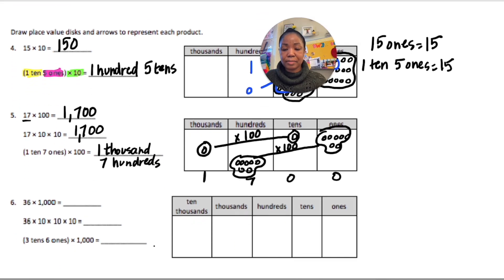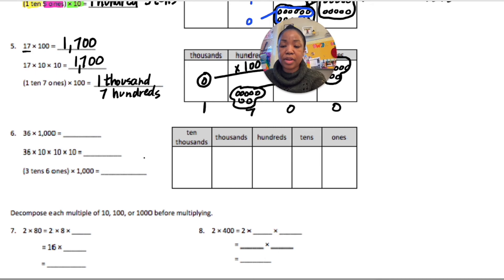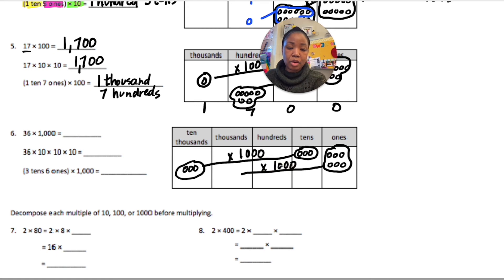On to number 6. Okay, this time we're doing 36 times 1,000. So, I'm going to put 3 in the tens and 6 in the ones. You could have put 36 in the ones as well. Okay, so I'm moving this three spaces because 1,000, three zeros or times 10 times 10 times 10. So, I'm going to move this three spaces. And I'm also going to move this three spaces.